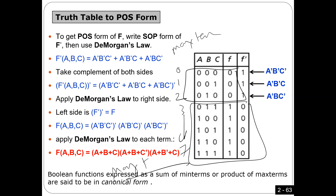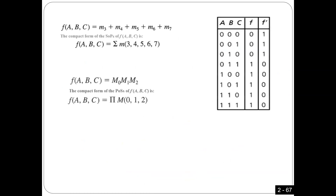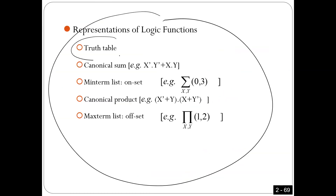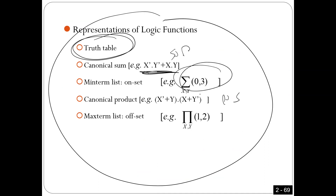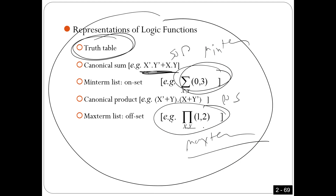If I give you the max terms, you can easily get the min terms, because these are the locations of the zeros, so the other locations should be ones. If I give you the location of the ones, it's easy to find the location of zeros. In this course, I'm going to use different approaches to define a function: sometimes using truth table, sometimes using equation in sum of product or product of sum, sometimes using min terms, sometimes using max terms. It's easy to convert between them.